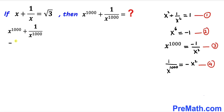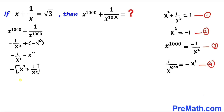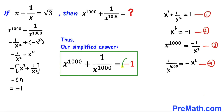Substituting into the final expression: x^1000 + 1/x^1000 = -1/x² + (-x²) = -(1/x² + x²) = -(x² + 1/x²). From equation 1, x² + 1/x² = 1, so this becomes -(1) = -1. Therefore x^1000 + 1/x^1000 equals negative 1.